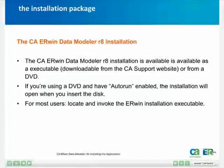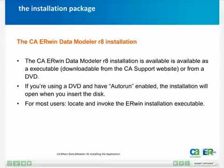The Irwin installation package is available in a variety of forms — predominantly an executable which is downloaded from the CA Support website, but it is also available on DVD. If you're using a DVD and have Auto Run enabled, all you have to do is put the DVD in your PC and the installation process will be invoked. If not, you simply have to locate the setup executable for Irwin Data Modeler R8 and invoke that to begin the installation process.